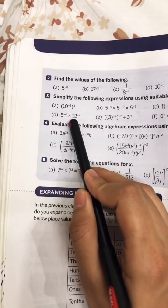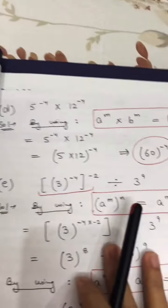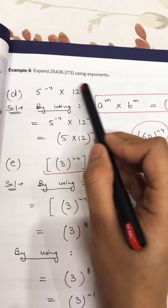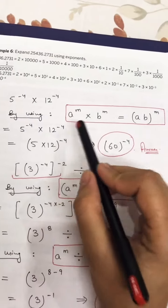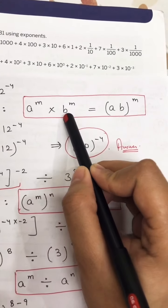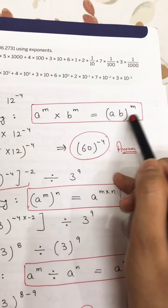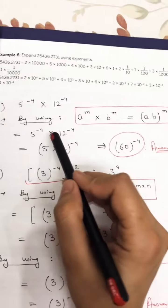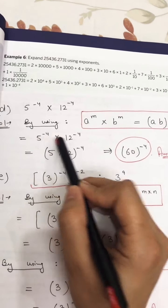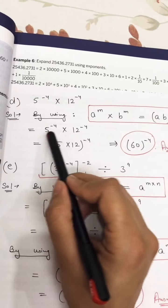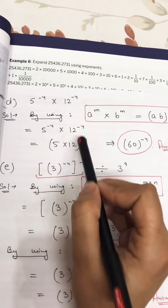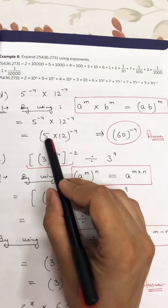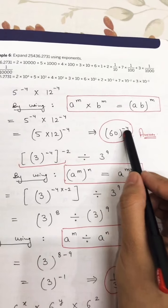Part D is 5 raised to power minus 4 multiplied by 12 raised to power minus 4. Here base is different and powers are same, so we use the law: a raised to power m multiplied by b raised to power m equals a b raised to power m. We multiply 5 and 12 together and write the power minus 4 once outside. So 5 times 12 is 60, giving 60 raised to power minus 4 as your answer.